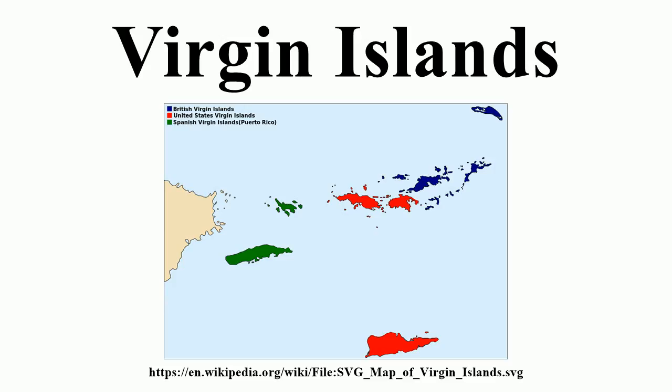History: The Virgin Islands were originally inhabited by the Arawak, Carib, and Ciboney peoples, all of whom are thought to have perished during the colonial period due to enslavement, foreign disease, and mass extermination brought by European colonists.